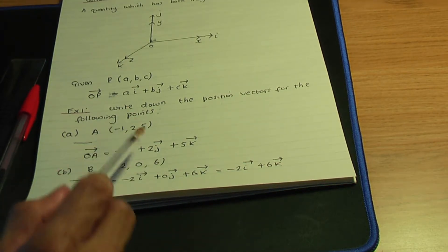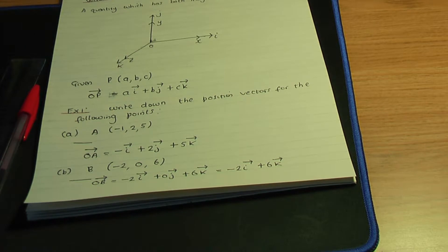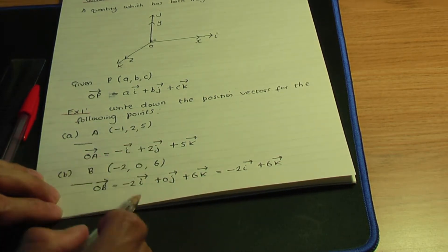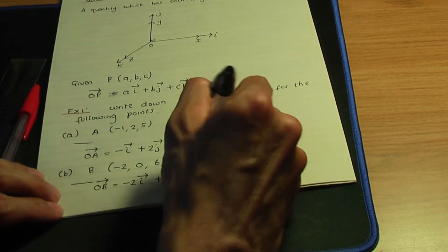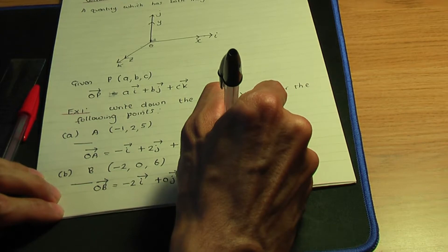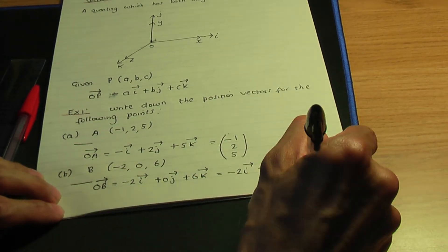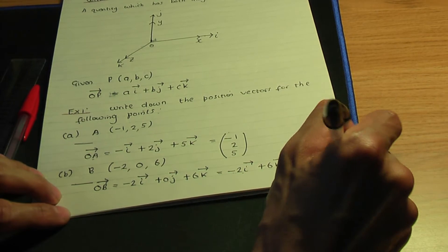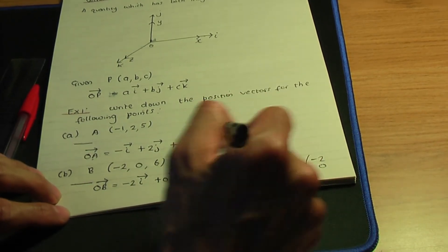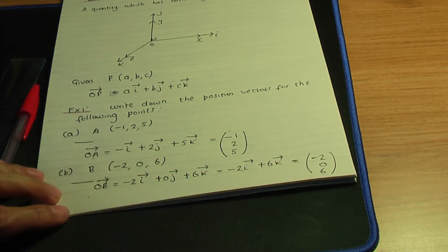I normally write vectors in terms of the unit vectors i, j and k, but you could also represent them as column vectors. So minus one i plus two j plus five k can be written as the column vector (minus one, two, five). Similarly, minus two i plus six k can be written as the column vector (minus two, zero, six), where zero indicates there's no j component.